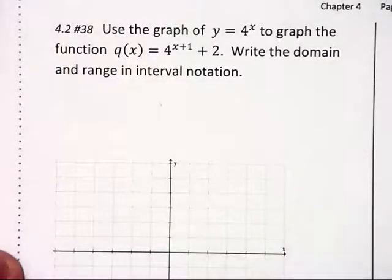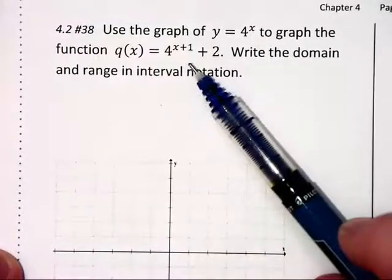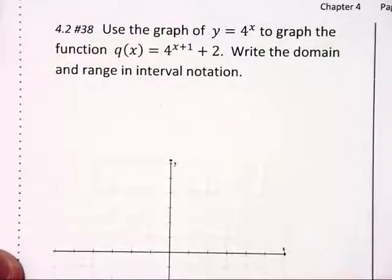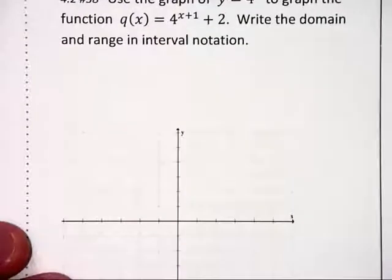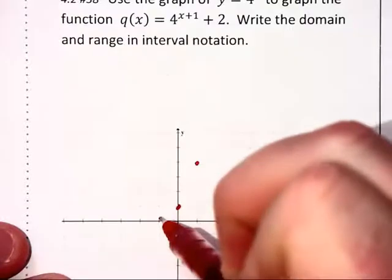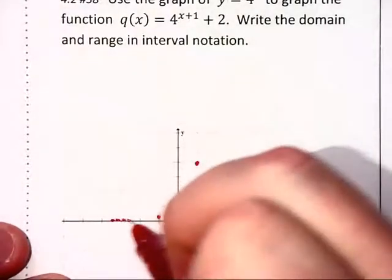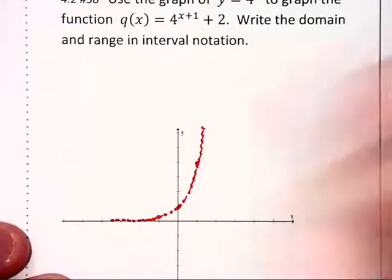Now we're being asked to take our graph of y equals 4 to the x and transform it into this next graph. So let's draw our previous graph on the screen here yet again. It goes through 0, 1, and 1, 4. And I'm going to just lightly dot this in here in red. And there's the original.